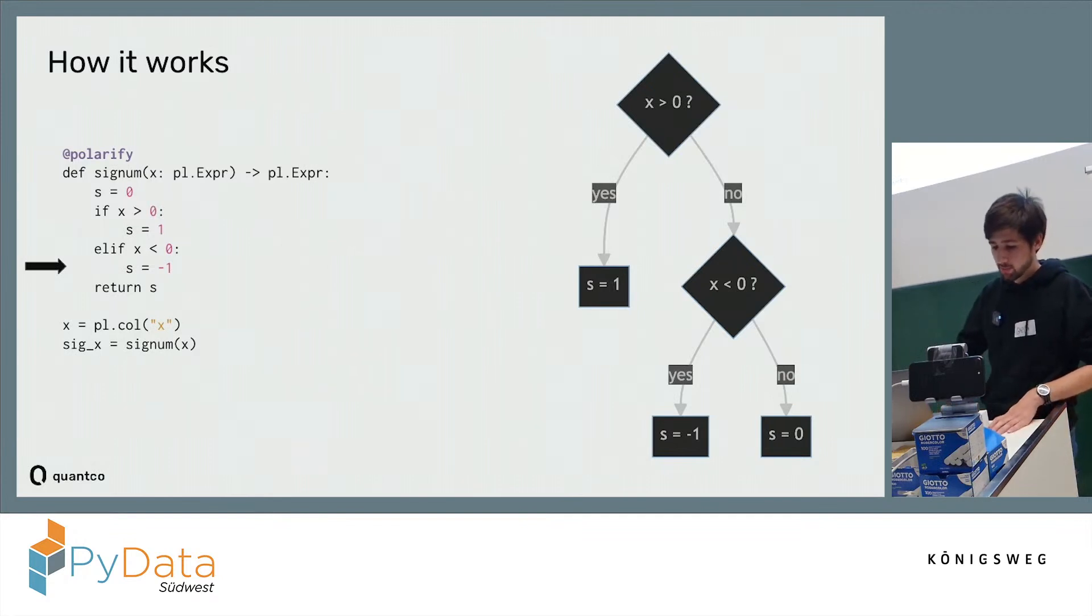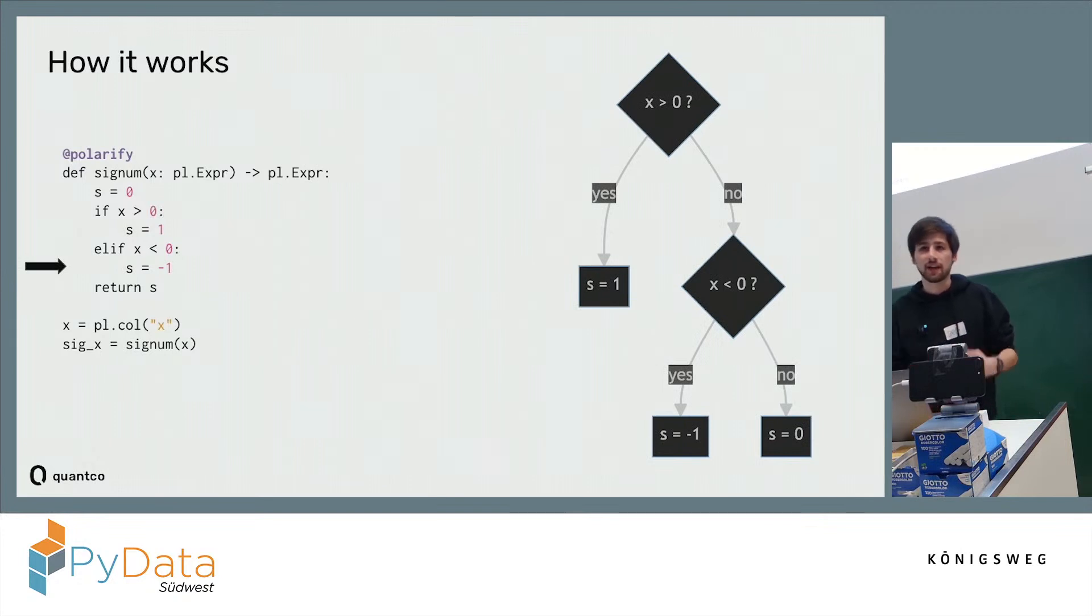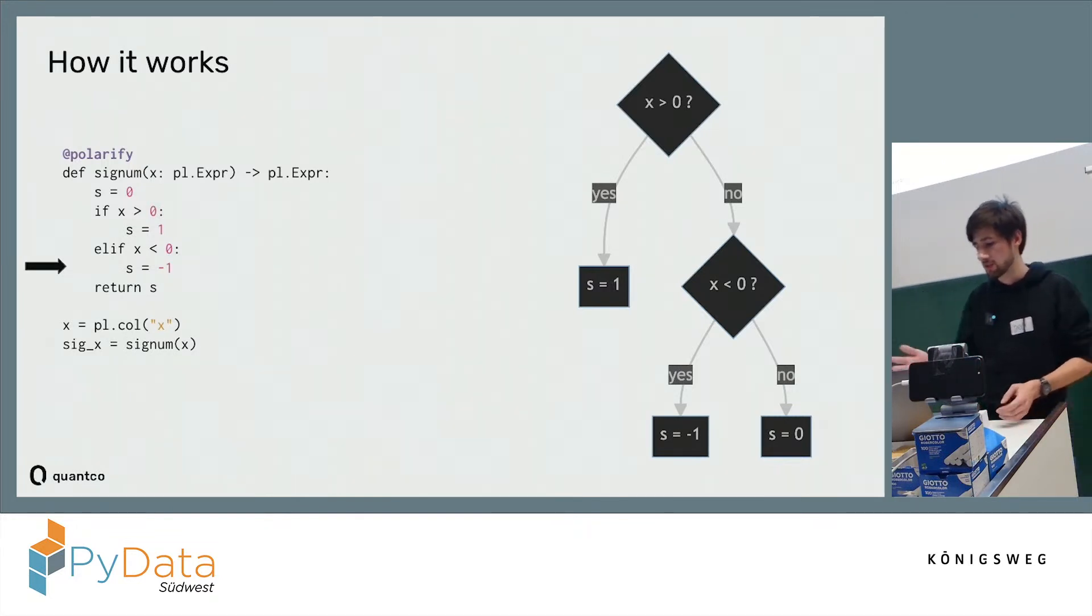We then reach this return statement, and now we need to figure out what S final value will be in each branch. We basically just inline S with the final value.